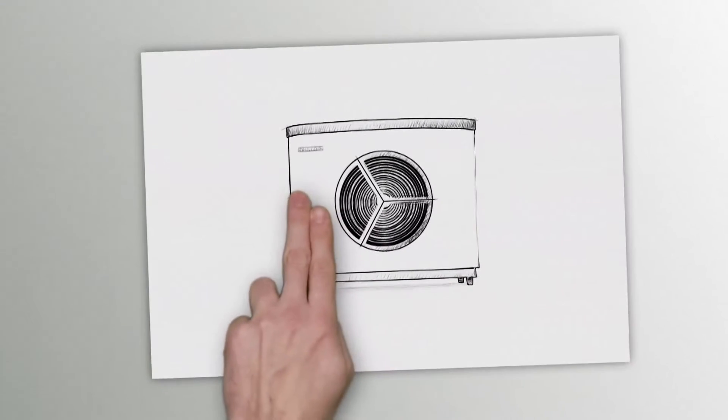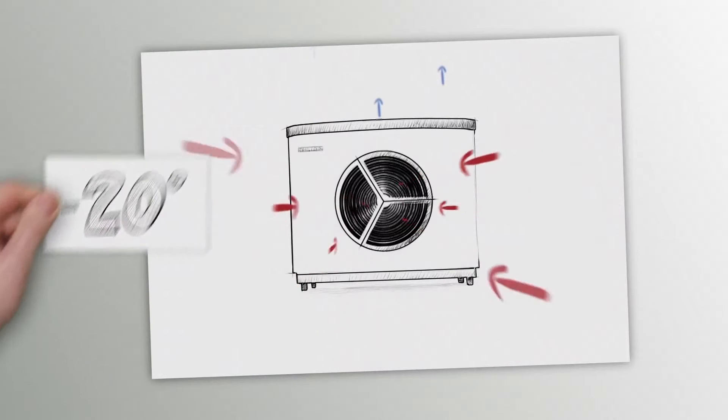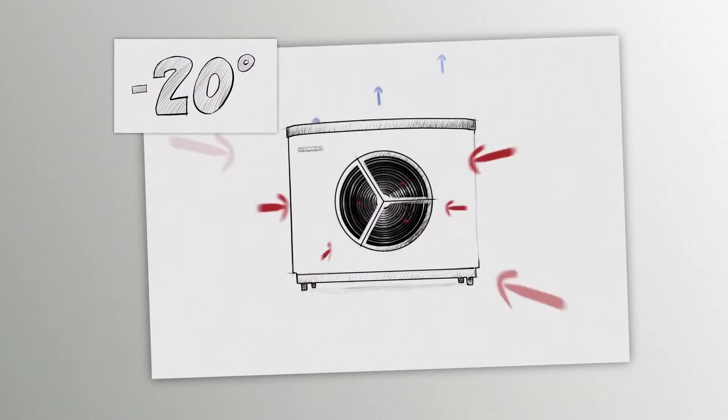An air source pump works by drawing in outside air and transferring the heat to the heating circuit of the house. Efficient systems can still harvest heat even when it is minus 20 degrees outside.